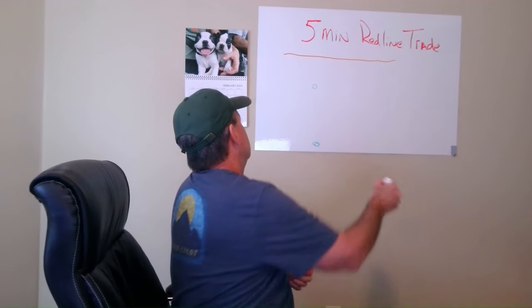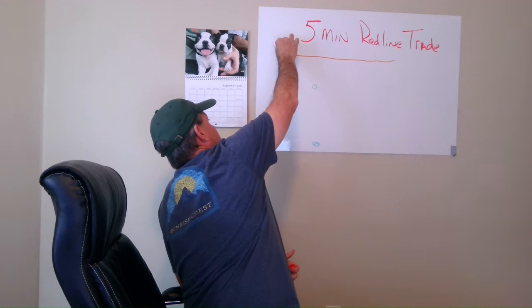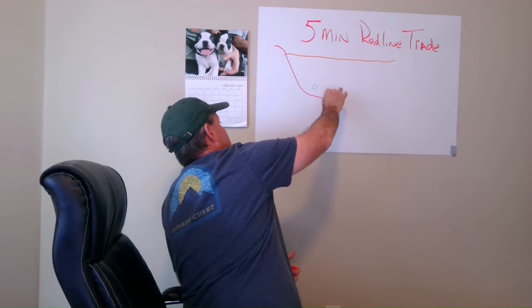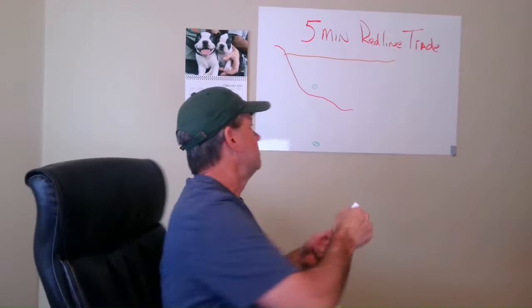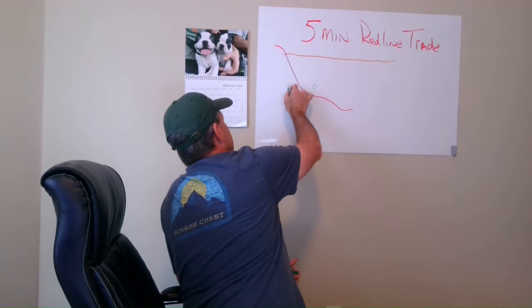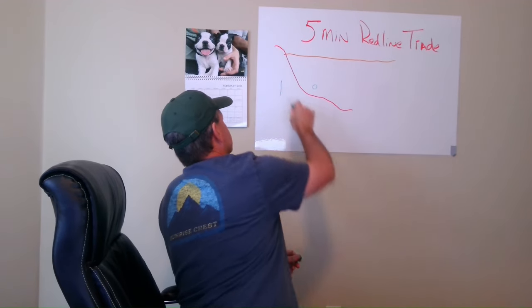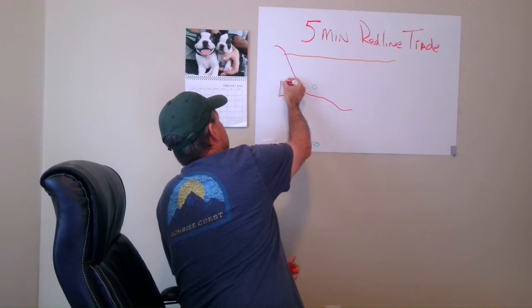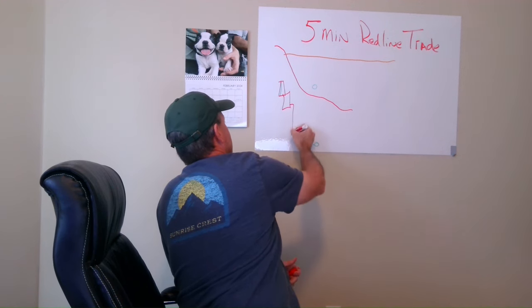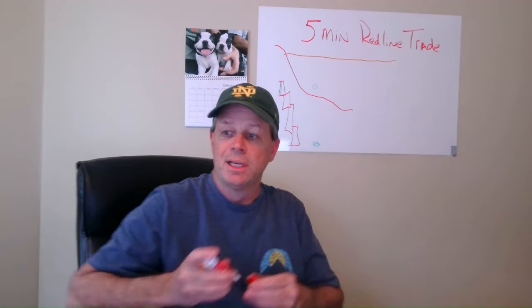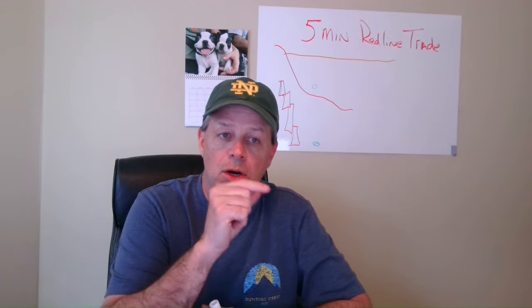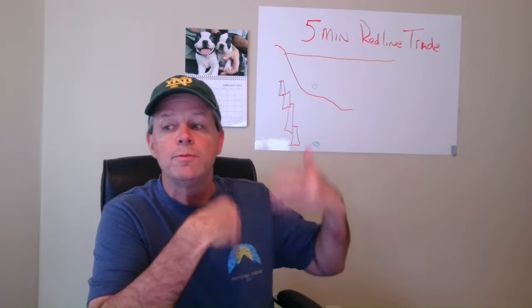If you've got your five-minute red line trending down and price comes down to it, price came down because it's pulling the five-minute with it. Remember, the five-minute is a 21 SMA off of the five-minute data, so it moves rather slow — it's kind of like an elephant.